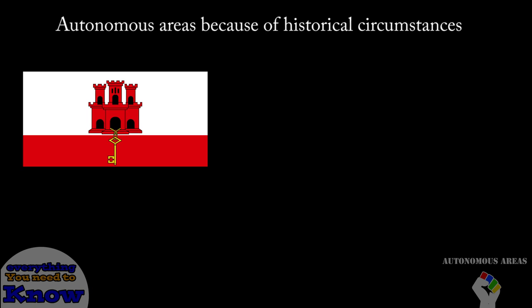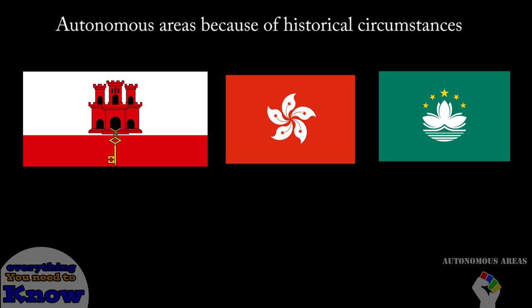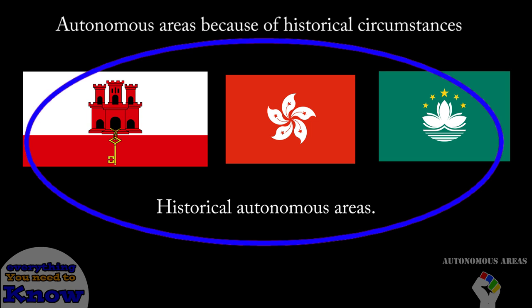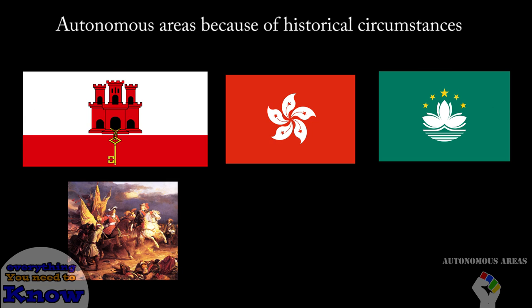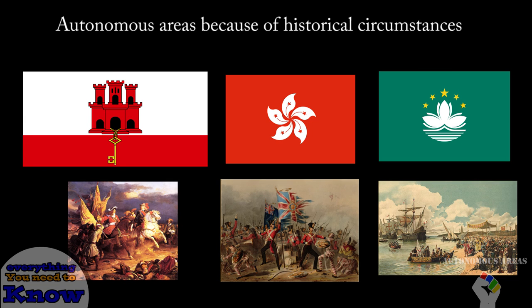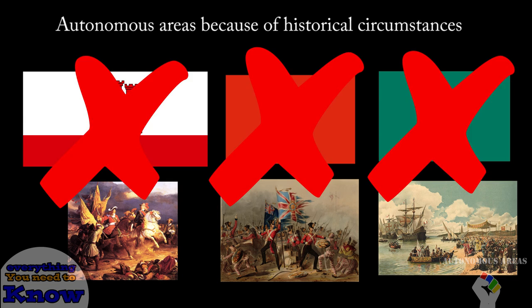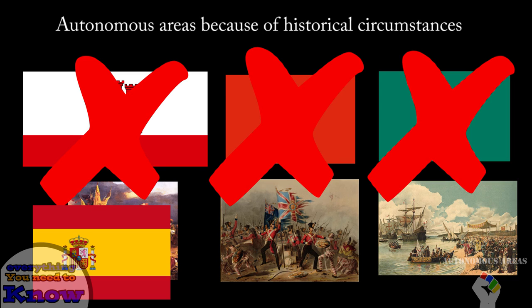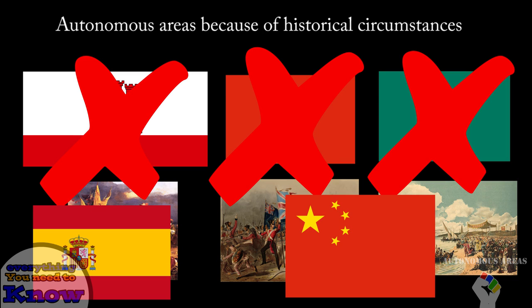I believe that Gibraltar, Hong Kong, and Macau are three prime examples of autonomous regions that exist strictly because of historical events. If the War of Spanish Succession, Opium Wars, and Portuguese colonization would have never happened, these three regions would still be owned by Spain or China because their culture would have been untouched.